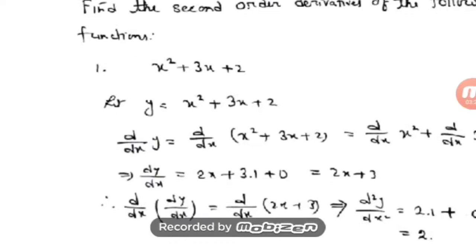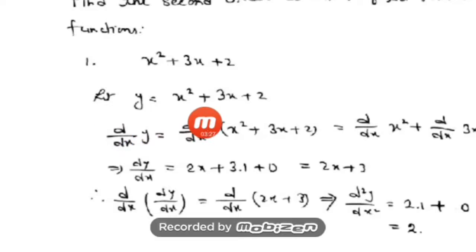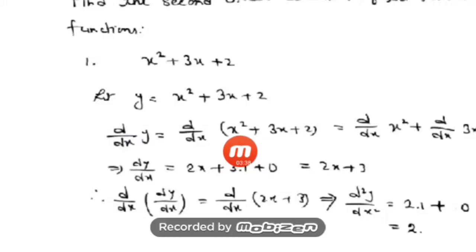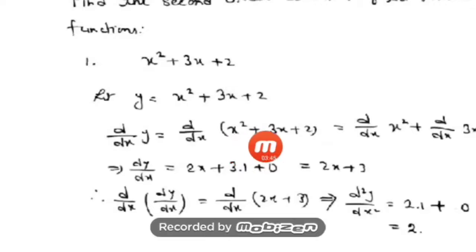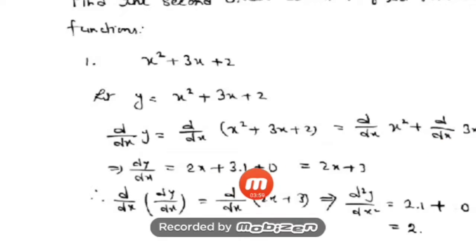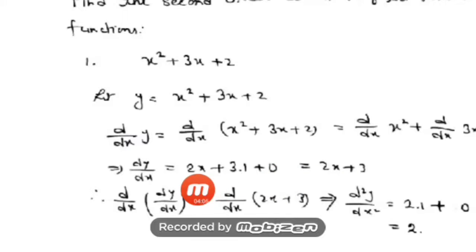Let us name it y, so y = x² + 3x + 2. First we do the first order differentiation: d/dx of y equals d/dx of (x² + 3x + 2). Using the sum rule: d/dx of x² is 2x, d/dx of 3x is 3 (constant comes out, d/dx of x = 1), and d/dx of constant = 0. So the first order derivative dy/dx = 2x + 3.